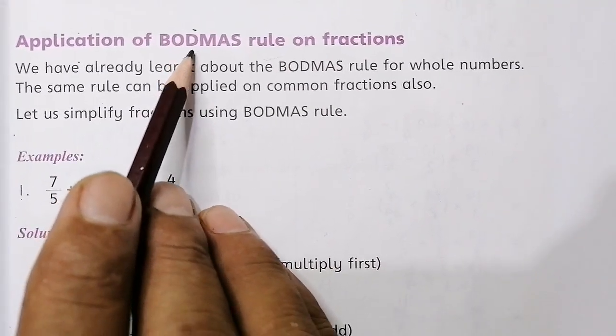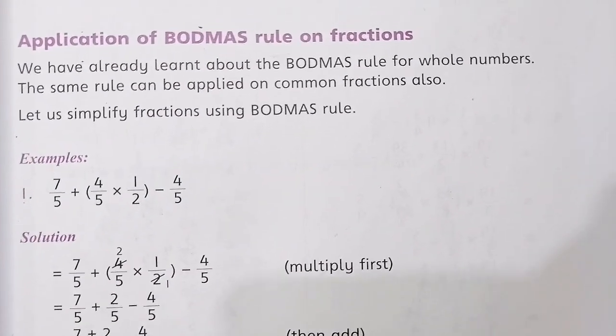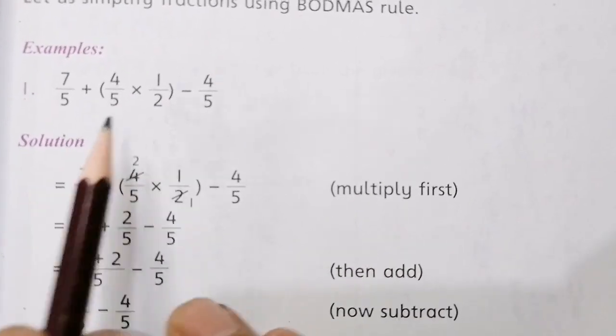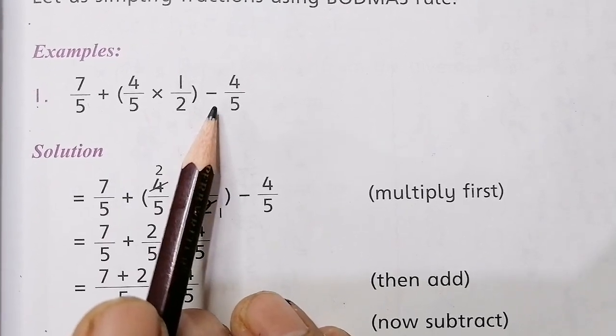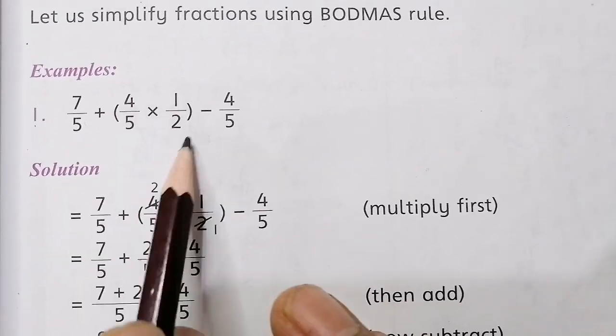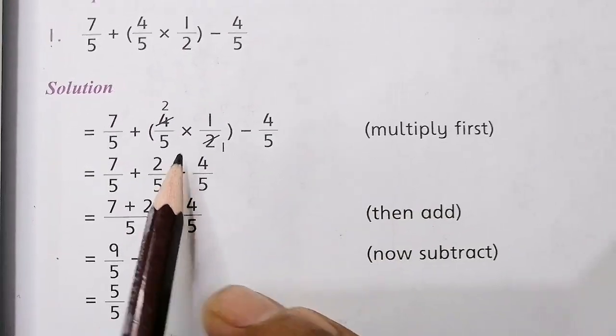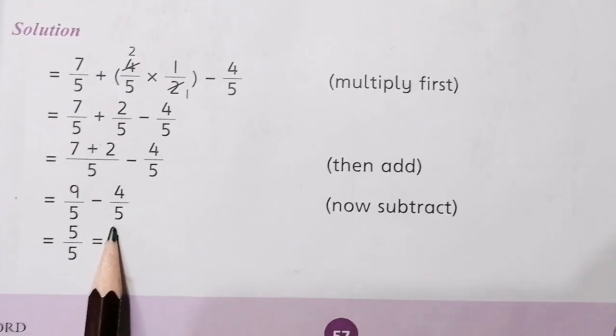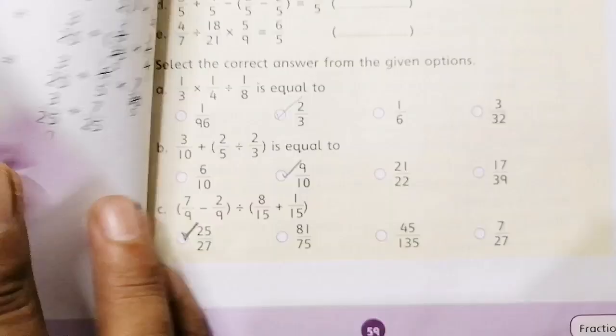You have learned in fourth class also brackets, division, multiplication, addition and subtraction. You can see the first example here: rules 75 plus addition, multiplication and subtraction. First of all, always we solve the bracket, then the multiplication sign is solved, and then addition and subtraction. We will solve the same in fractions.